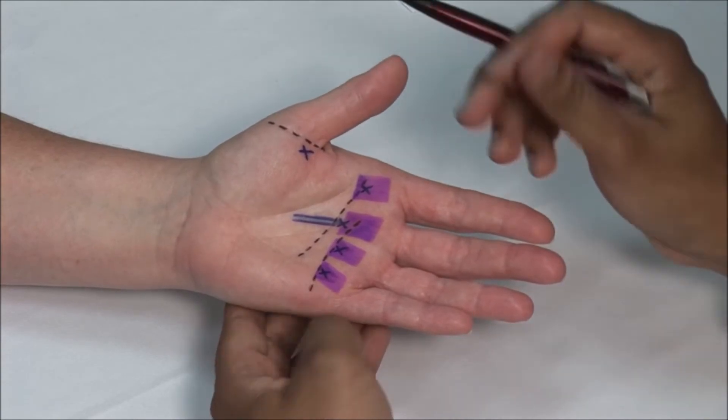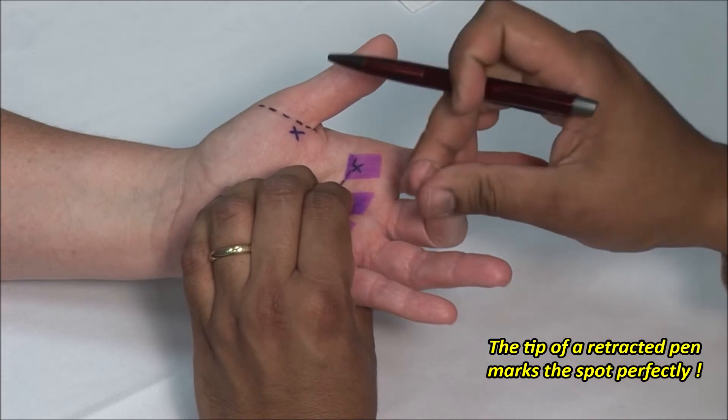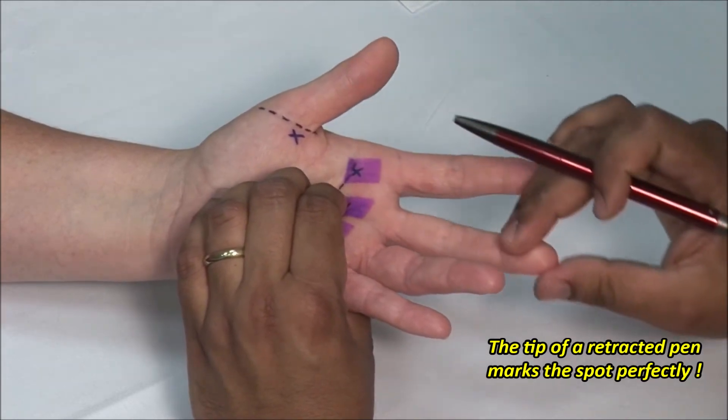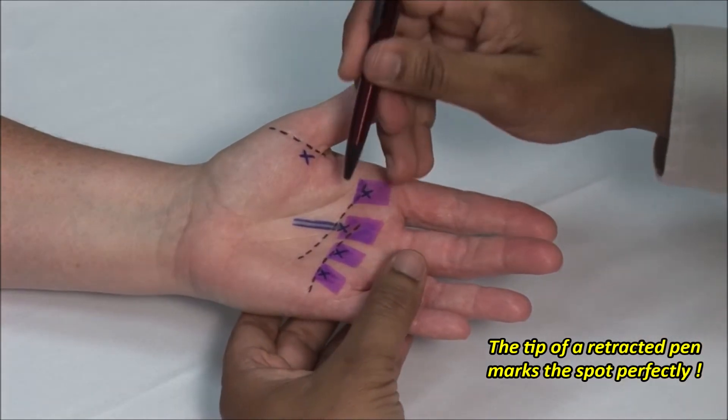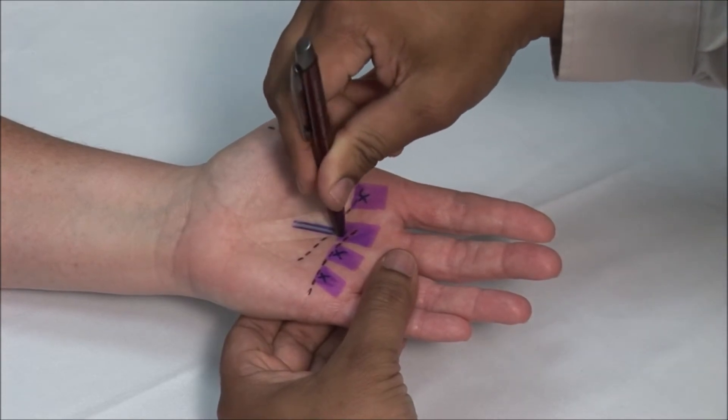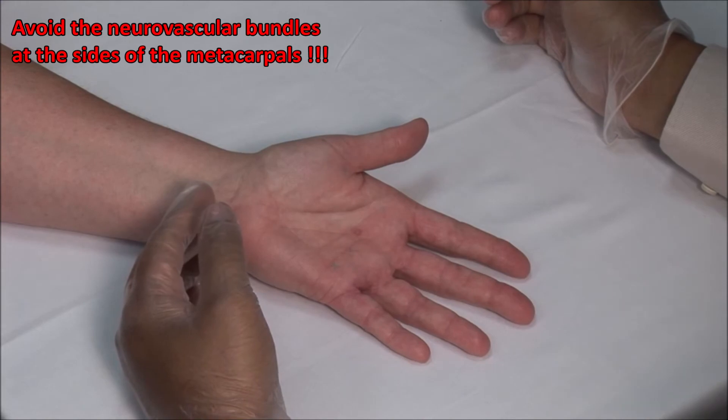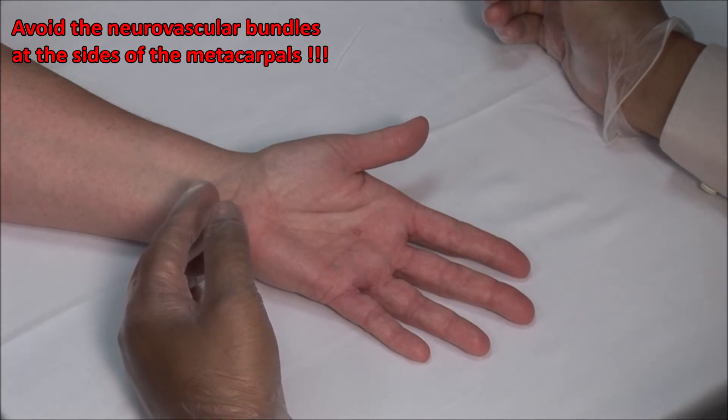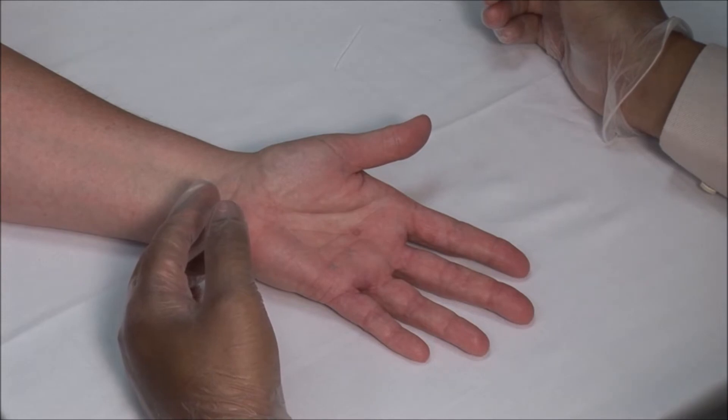Mark the injection point with a retractable pen. In this case, I am using the third flexor tendon for demonstration. Remember to avoid injecting towards the sides of the tendon as the neurovascular bundle can be damaged. These injections should always be done using sterile precautions.